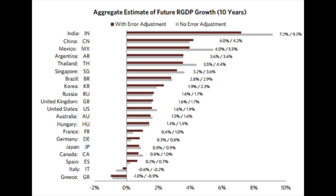The winners for the next 10 years are India, China, Mexico, Argentina, Thailand, Singapore, Brazil, Korea, and Russia — and then we have the developed world: United Kingdom, US, Australia, Hungary, France, Germany, Japan, Canada, Spain, Italy, and Greece. As you can see, the top countries are emerging market countries and the bottom countries are developed countries.